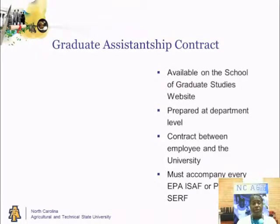The Graduate Assistantship Contract is available on the School of Graduate Studies website. It is prepared at the departmental level. It is a contract between the employee and the university, and it must accompany every EPA Internal Salary Authorization Form or PD 440 Student Employment Recommendation Form for all graduate students.